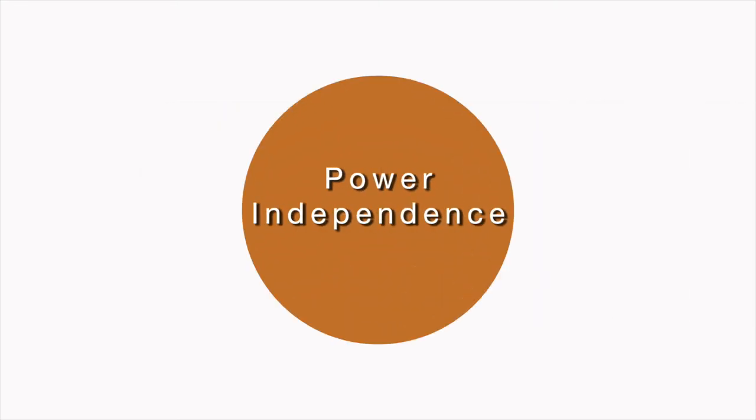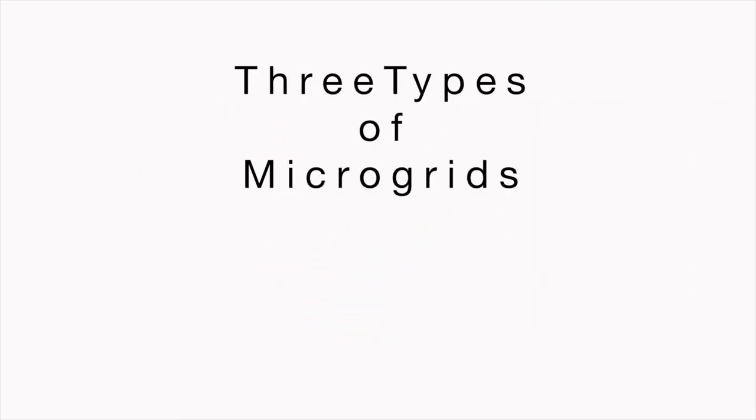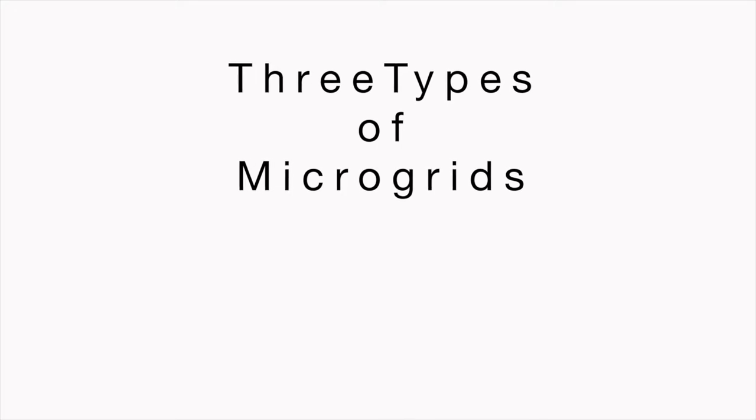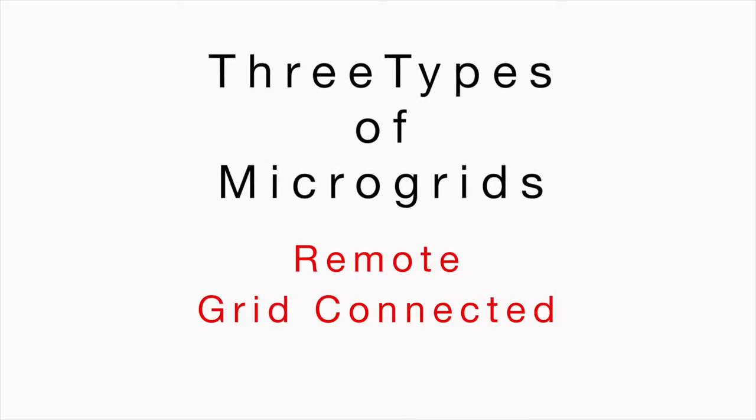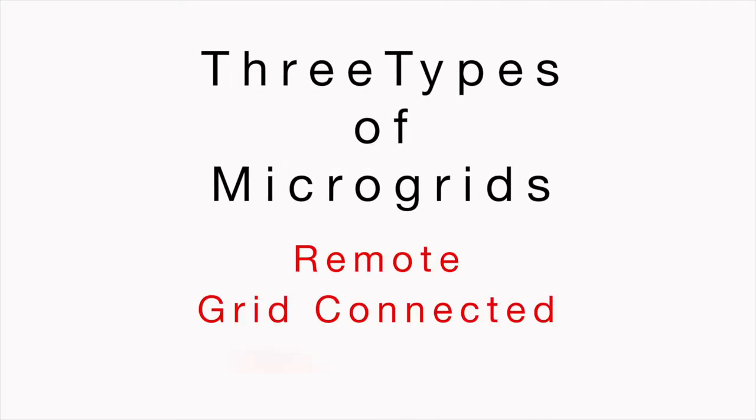A microgrid has power generation independent of the macrogrid. There are three types of microgrids: remote, macrogrid connected, and networked.